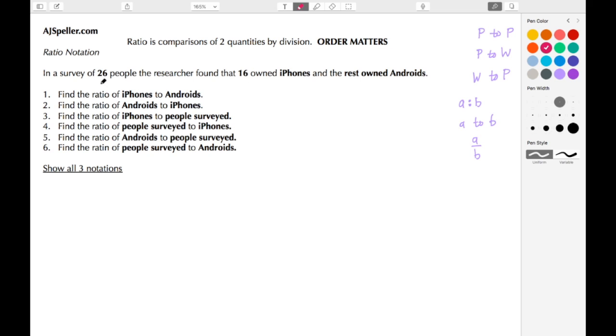The important parts here are 26 is the total number of people that took the survey, so that would be a whole. We know 16 people own iPhones, that would be a part. And then we see that the rest own Androids, that's also a part, but they didn't tell us how many people own Androids, we need to calculate that.